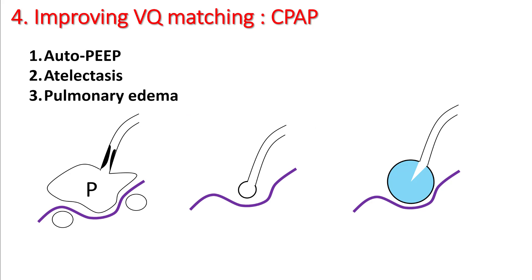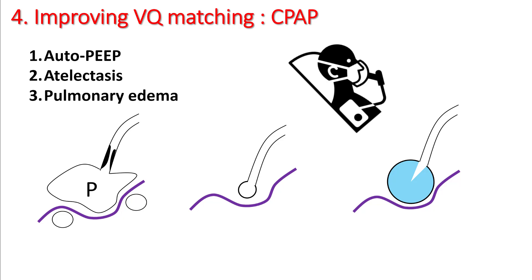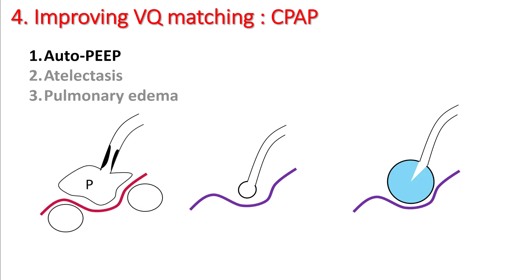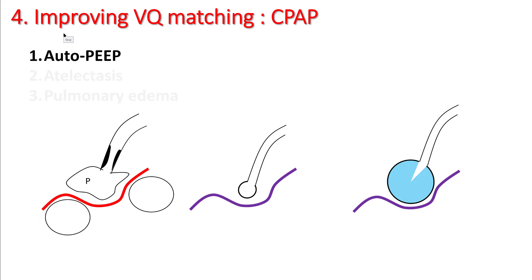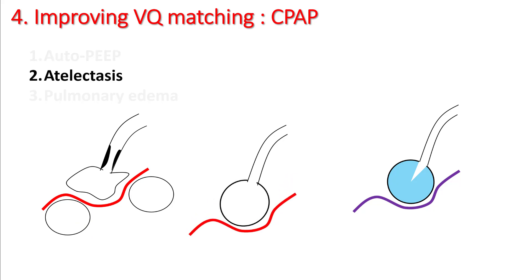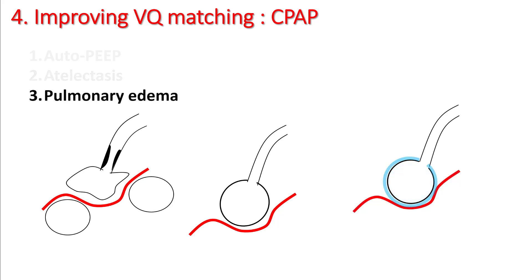You can also improve VQ matching using CPAP. CPAP can help improve VQ matching in patients with auto-PEEP, atelectasis, and pulmonary edema. In auto-PEEP, CPAP decompresses large bullae and allows better perfusion to more functioning alveoli. In atelectasis, it recruits more alveoli, improving the ventilation-perfusion ratio. In heart failure, it pushes fluid from the alveoli to pericapillary beds and improves oxygenation.